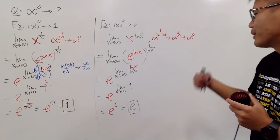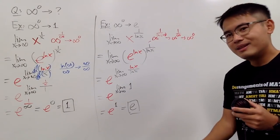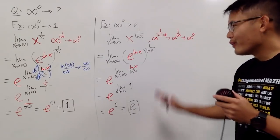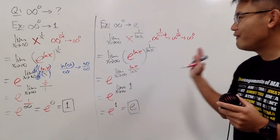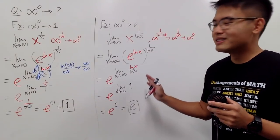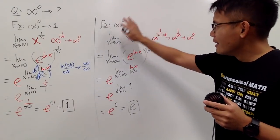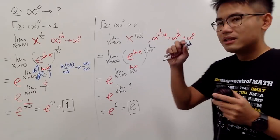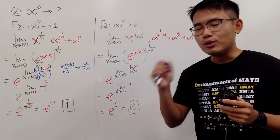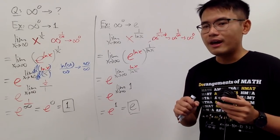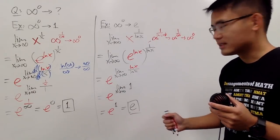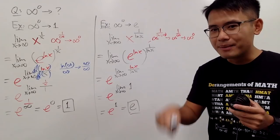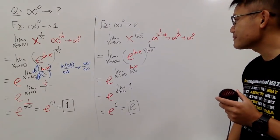Now perhaps I'll give you a little challenge: what can I change here so that we still have infinity to the zero's power but end up with 5? Leave a comment below and let me know.